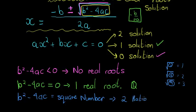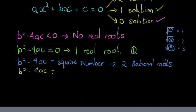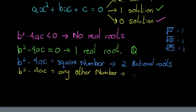Two rational roots — two rational solutions. And finally, if b squared minus 4ac is any other number, I will have two irrational roots.